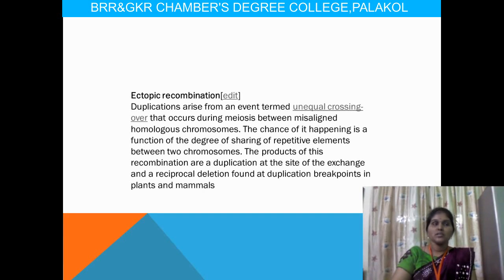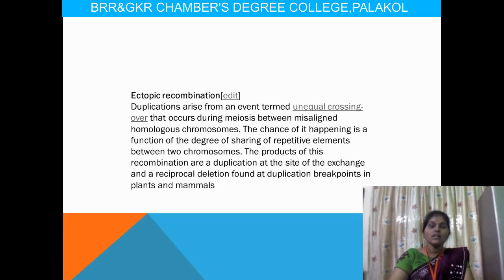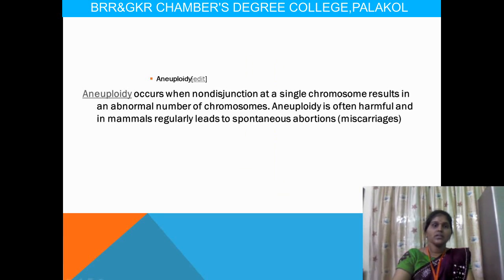Ectopic recombination: duplication arises from unequal crossing over occurring between different chromosomes, where homologous chromosomes are misaligned with each other. The chance of this happening depends on the degree of sharing repetitive units of the same characteristics between two different chromosomes. The products of these combinations are duplicated at different sizes, occurring in both plants and animals. During duplication, the same genes are duplicated one by one, adding up the same gene again. That is called ectopic recombination.